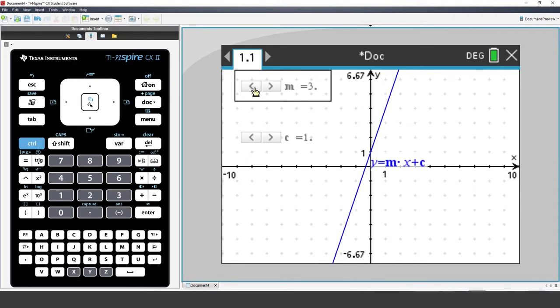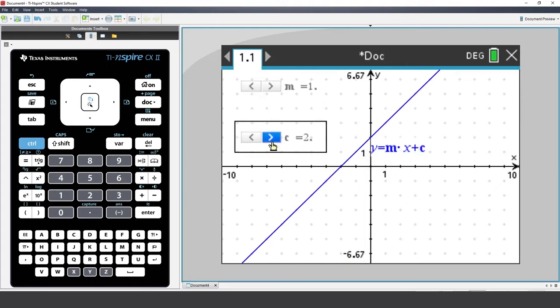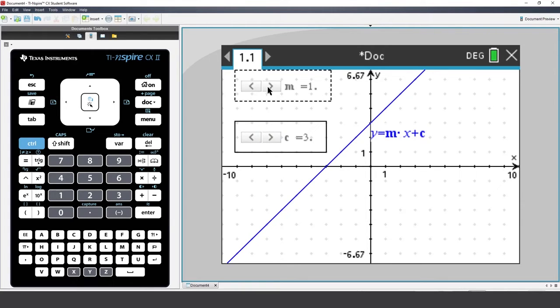Now try slider c. This slider provides the y-intercept. Going back to slider m, notice that the graph sort of rotates around the y-intercept.